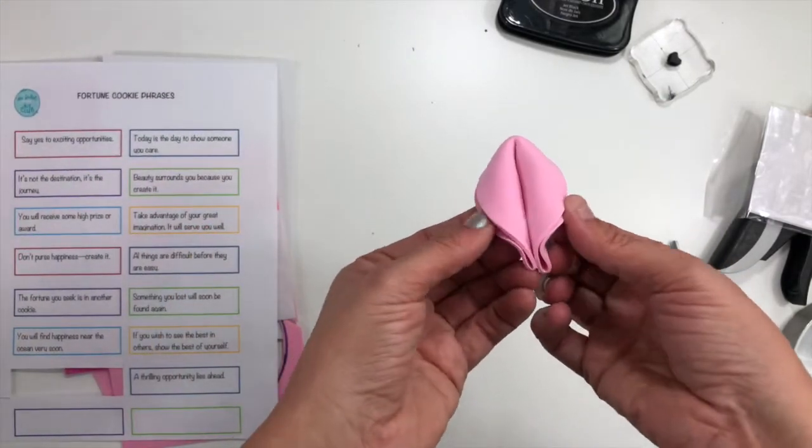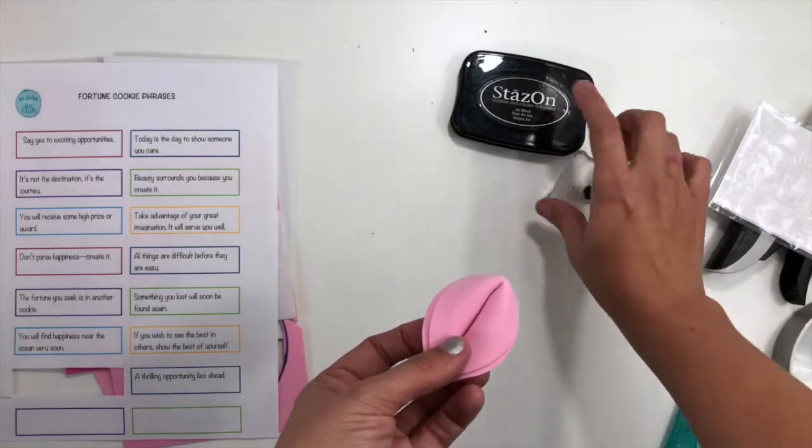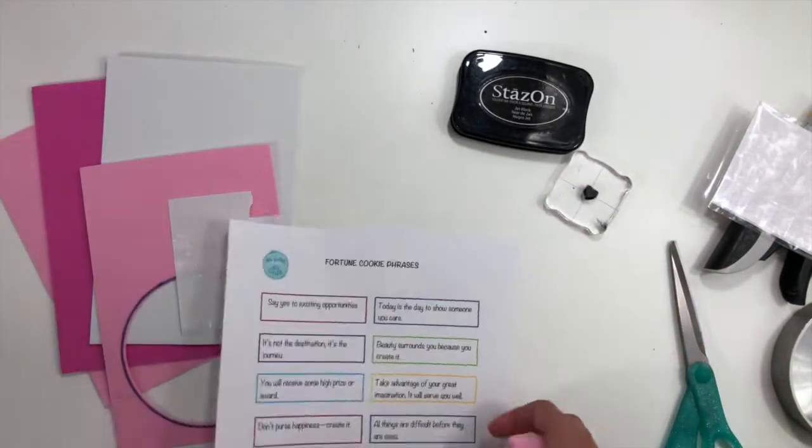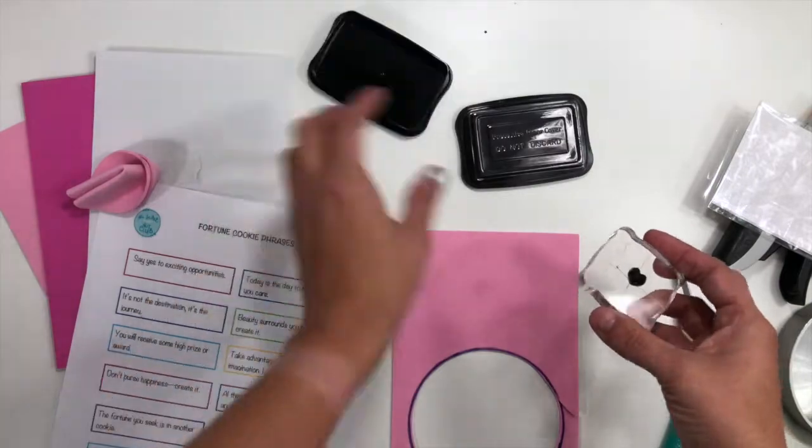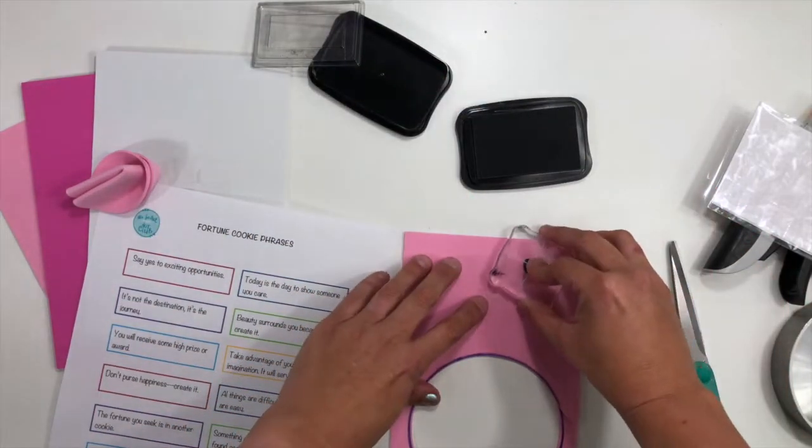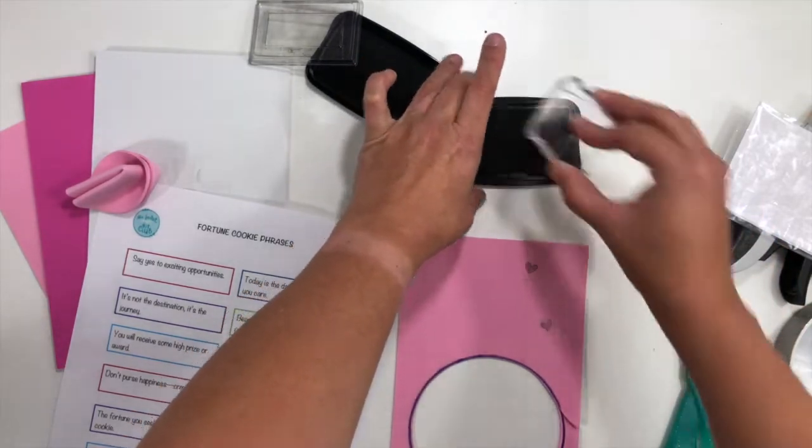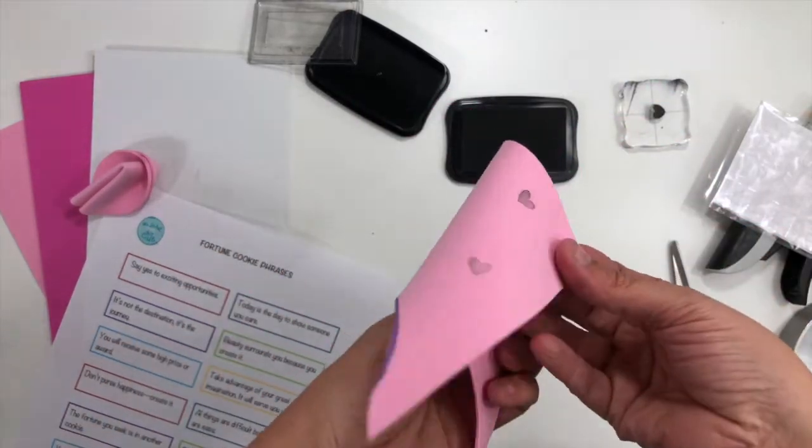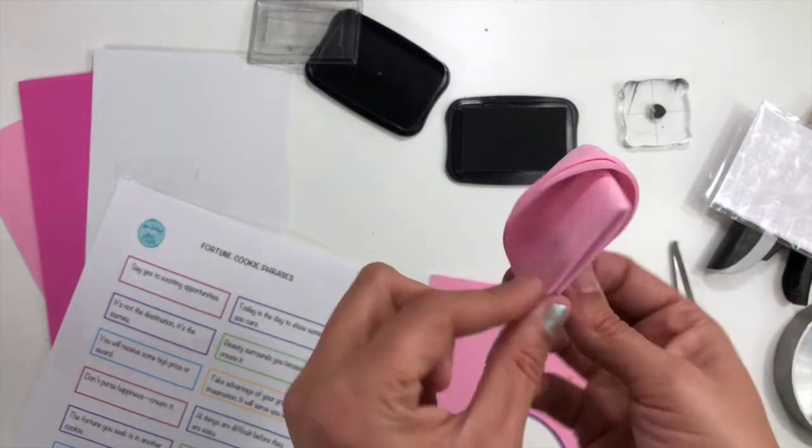Now if you wanted to get a little bit more fancy, you could absolutely take a stamp with some permanent ink and you could have your kiddo take your foam and stamp little hearts to spice up that foam, so that when you fold it up it has some little heart details all around it.